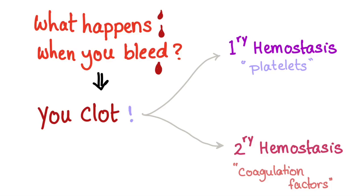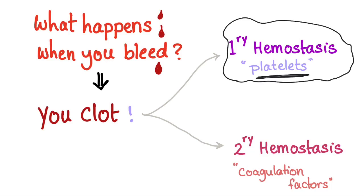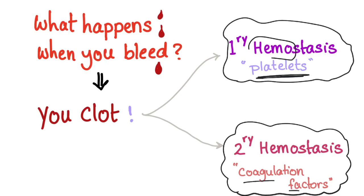Before I tell you what Christmas disease is, let's talk about what happens when you bleed. You clot. But this clotting or coagulation happens in two steps. First, primary hemostasis, due to platelets — platelets are the heroes here. Second, secondary hemostasis, thanks to coagulation factors. Hemo means blood, stasis means stable or stop, so it's a process to stop bleeding and preserve the blood.